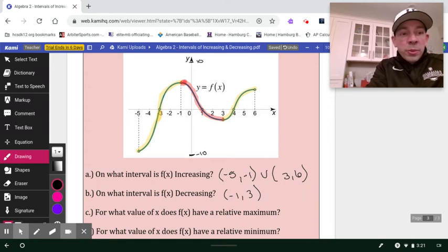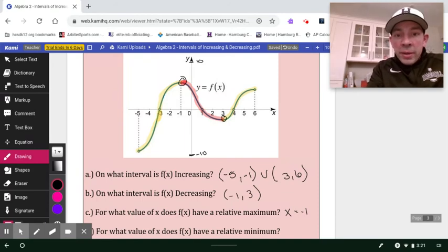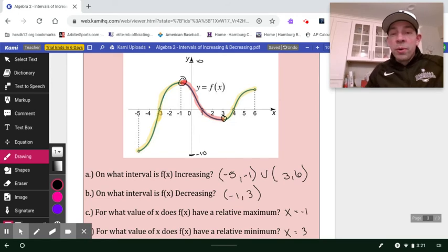Where do we have a relative max? Where does the function change from increasing to decreasing? We'll say that occurs right here at x equals negative one. The relative min is going to be right here at x equals three. That's the instantaneous point where the graph changes from decreasing to increasing.